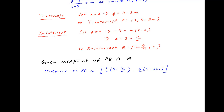Equating the abscissas, we get half of (3 minus 4 upon m) is equal to 3, and equating the ordinates we get half of (4 minus 3m) is equal to 4.